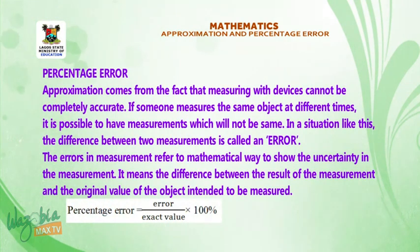Percentage error. Approximation comes from the fact that measuring with devices cannot be completely accurate. If someone measures the same object at different times, it is possible to have measurements which will not be same. In a situation like this, the difference between two measurements is called an error. The errors in measurement refer to mathematical way to show the uncertainty in the measurement. It means the difference between the result of the measurement and the original value of the object intended to be measured. Percentage error is equal to error over exact value times 100%.